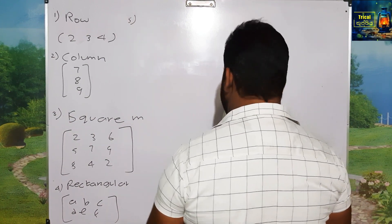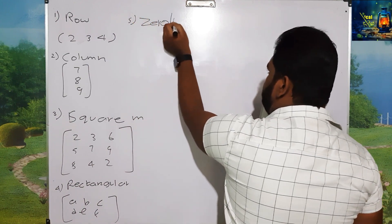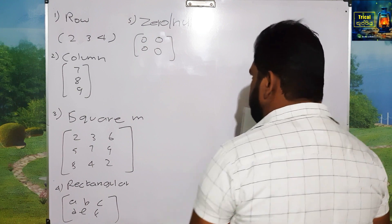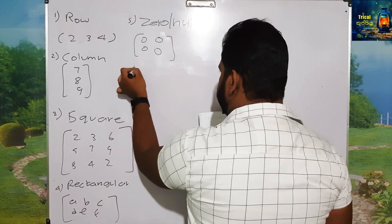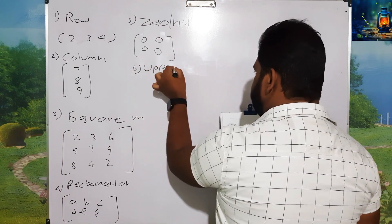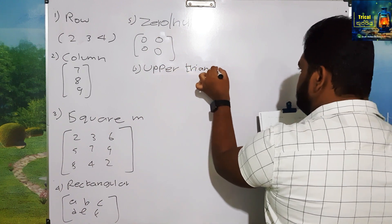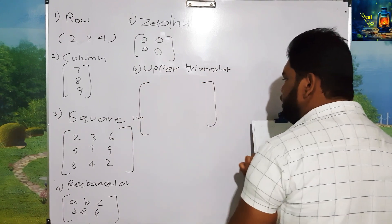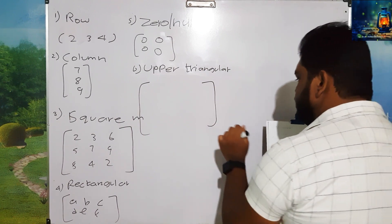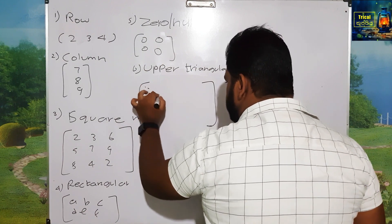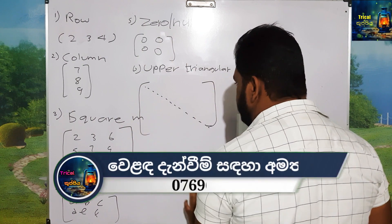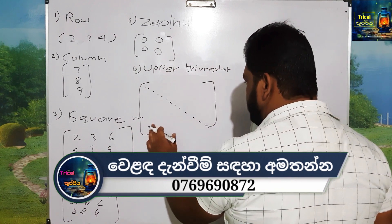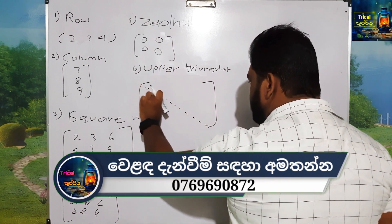This is a zero matrix. This is a triangular matrix. If you want to make this triangle diagonal, you can make this triangle diagonal.